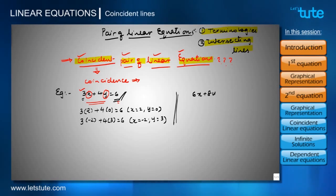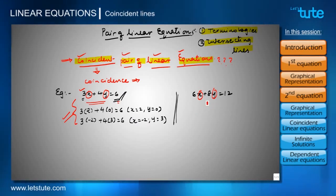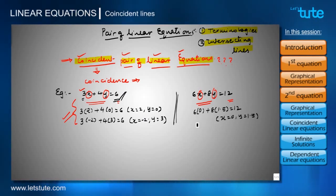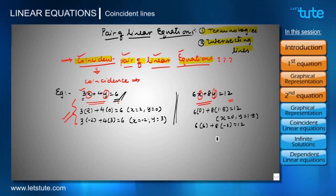Now let's take a second equation: 6x plus 8y equals 12. We repeat the same process to get minimum two sets of values. Starting with x equals 0: 6 times 0 is 0, so y must be 1.5 to get 12 on the right-hand side. First set: x=0, y=1.5. For the second set, taking x equals 6: 6 times 6 is 36, so y must be -3. Second set: x=6, y=-3.